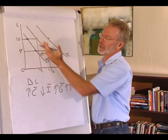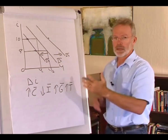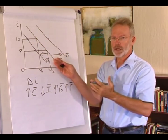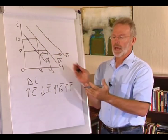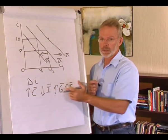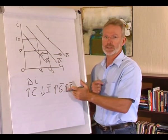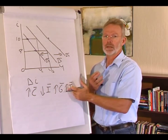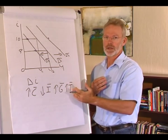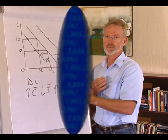As we can see, a change in interest rate will cause a movement along the IS curve, and a change in any of the autonomous variables that affect the IS curve will cause a shift of the IS curve.